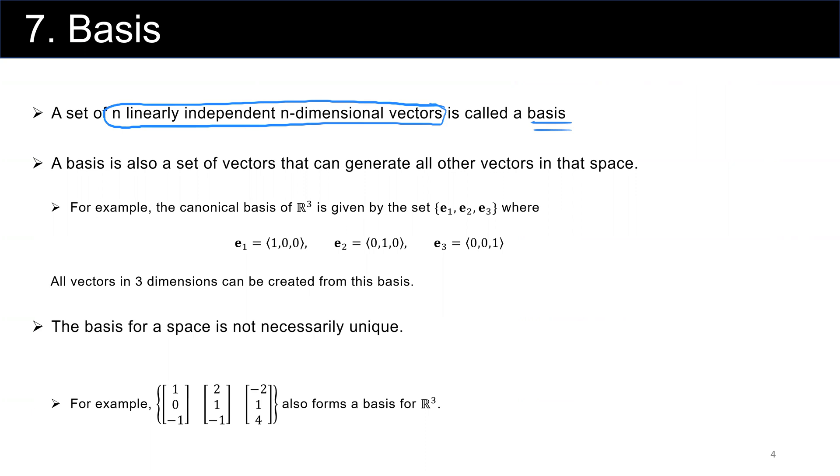For example, for the two-dimensional space, one basis is [0, 1], called E2, and [1, 0], called E1. So there are two linearly independent vectors in the 2D space.